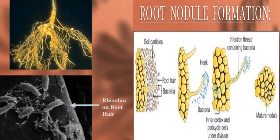Next is root. The outstanding feature is the presence of root nodules which harbor nitrogen-fixing bacteria inside them. These plants are grown to enrich the soil with nitrogenous substances.